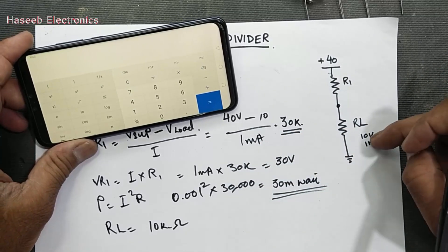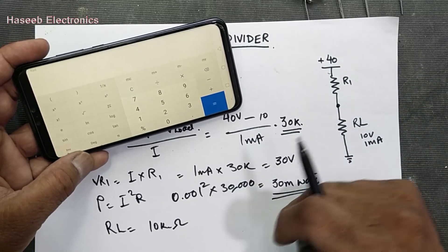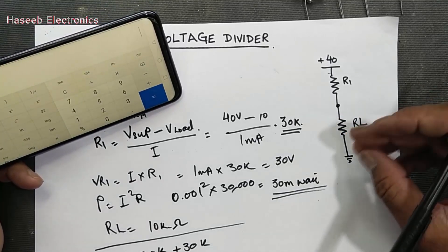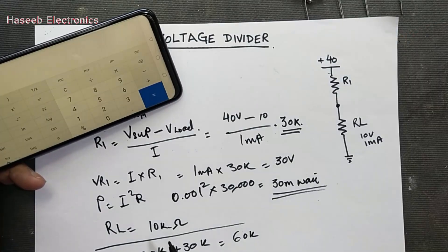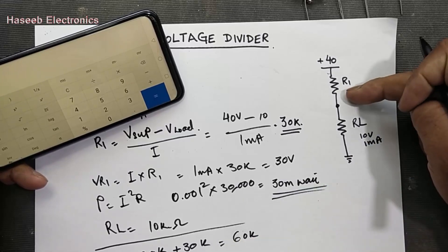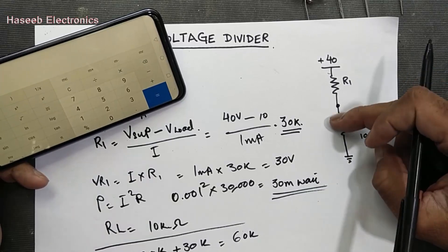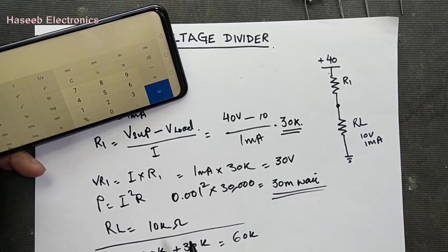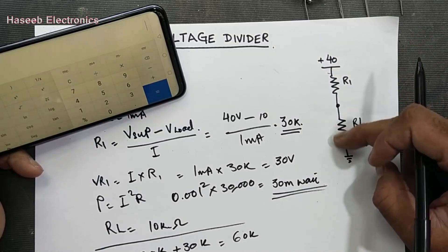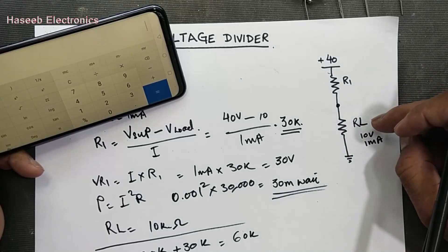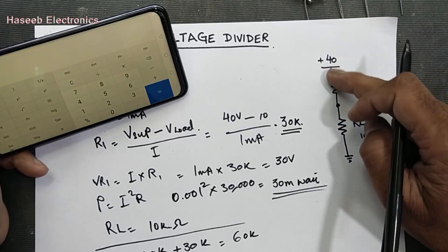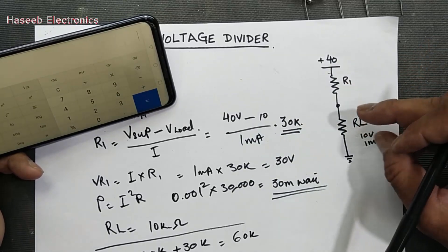If the load's internal resistance increases due to a failure — maybe one resistor burns out, causing an open circuit — the impedance increases. For example, if RL increases to 30 kilo-ohm, then we have 30 kΩ + 30 kΩ in series with 40 volts. Equal resistances means voltage divides equally — 20 volts drops here and 20 volts drops across the load. Now the load receives 20 volts instead of 10 volts, which can damage sensitive components or the entire circuit.